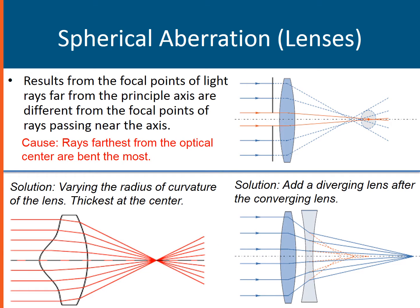Spherical aberration in lenses. For lenses, incident rays pass through the lens and get refracted. This aberration occurs because rays that are farthest from the optical center are bent the most. Since those rays are bent the most, they converge at a different point compared to rays that are much closer to the optical center. This gives rise to many focal points, and having many focal points means a blurry image.